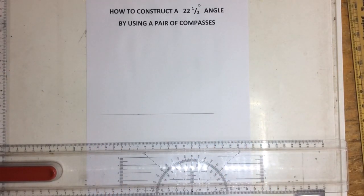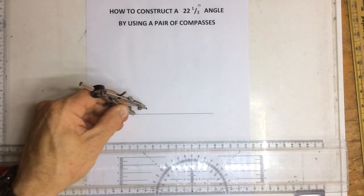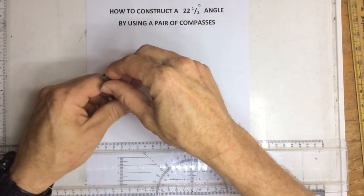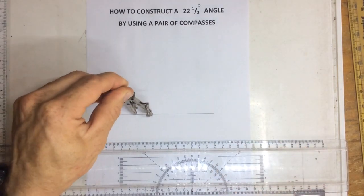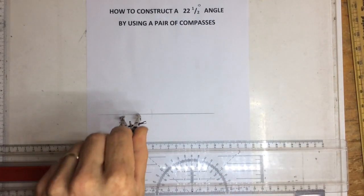What I'm then going to do is I'm going to take a pair of compasses, place it at that point, I'm going to draw an arc on that side and an arc on that side.